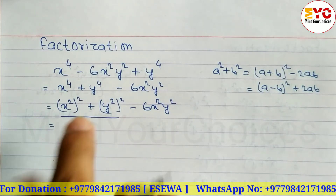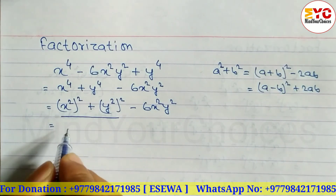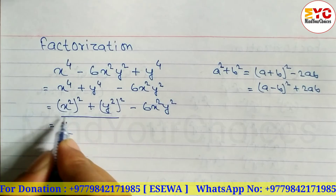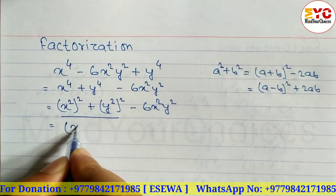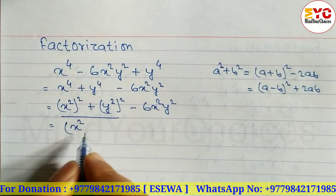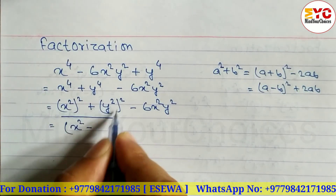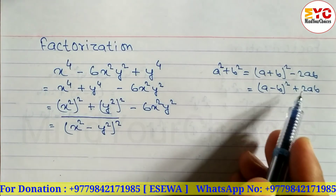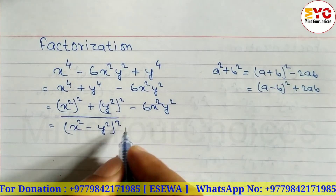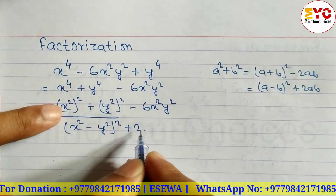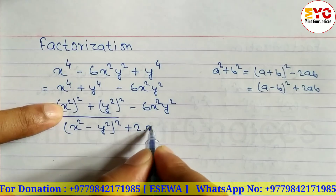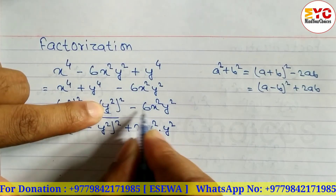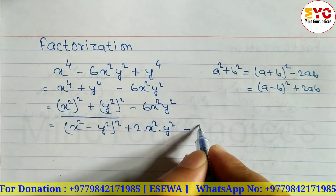Using the formula a squared plus b squared equals a minus b whole square plus 2ab: here a is x squared and b is y squared. So we write x squared minus y squared whole square plus 2 times x squared times y squared.